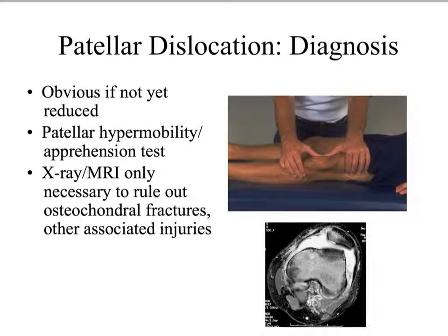To diagnose a patellar dislocation, if it hasn't reduced itself, the patella will be visibly laterally deviated. Within our clinical expertise, we can assess for patellar hypermobility by using a lateral glide of the patella: the clinician places both thumbs on the medial border and gently glides the patella laterally. This is called an apprehension test — we look at the patient's face to see if they get apprehensive. Other diagnostic tools include X-ray to rule out posterior patellar fracture and MRI to evaluate medial restraint ruptures.